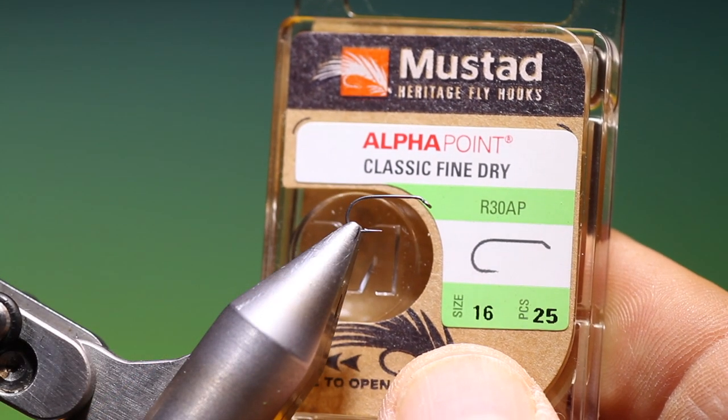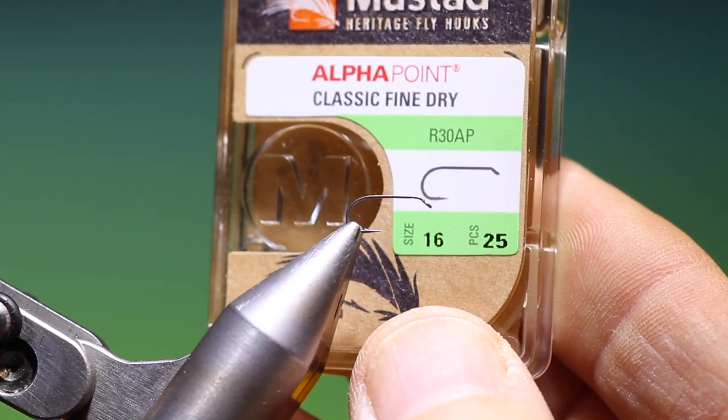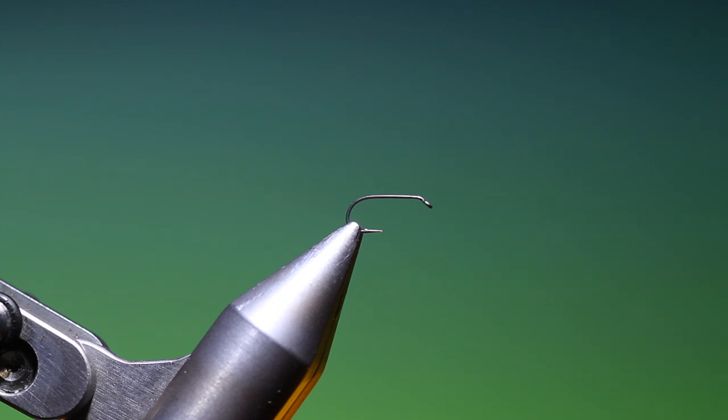We'll start with the Mustard Heritage Classic Fine Dry R30 size 16. This is an absolutely essential pattern if you're fishing small streams and beaver ponds.